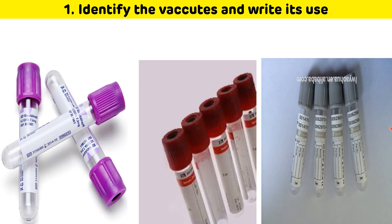The third vacutainer is the gray color fluoride vacutainer, which is used for the estimation of glucose because fluoride inhibits the enolase enzyme.